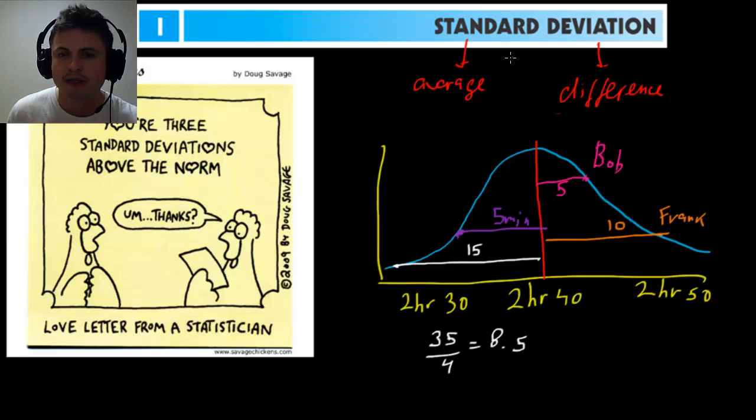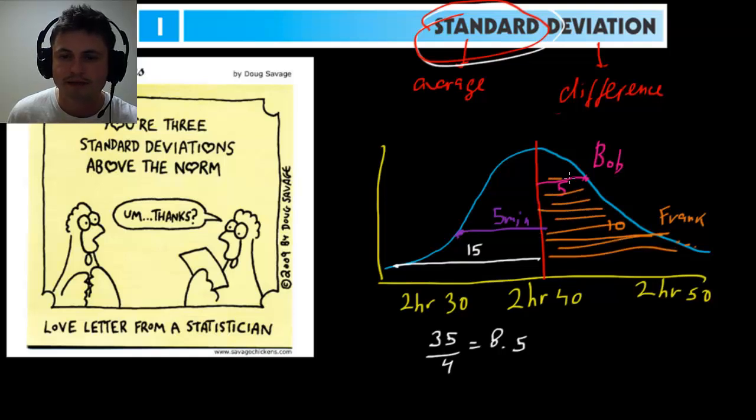For standard deviation, however, we're looking at the standard. In other words, standard means that we're looking at every single value. We're looking at Bob, Frank, Jane, and we're looking at every single person on this graph. And then we're doing the same thing for each of them, finding every single difference and then combining them together and finding the average of this difference. And this is what we call standard deviation.